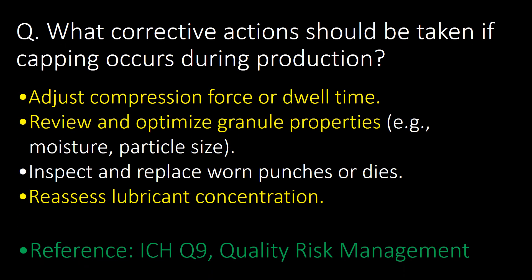What corrective actions should be taken if capping occurs during production? 1. Adjust compression force and dwell time. 2. Review and optimize granule properties, e.g. moisture and particle size. 3. Inspect and replace worn punches or dies. 4. Reassess lubricant concentration. Reference: ICH Q9 Quality Risk Management.